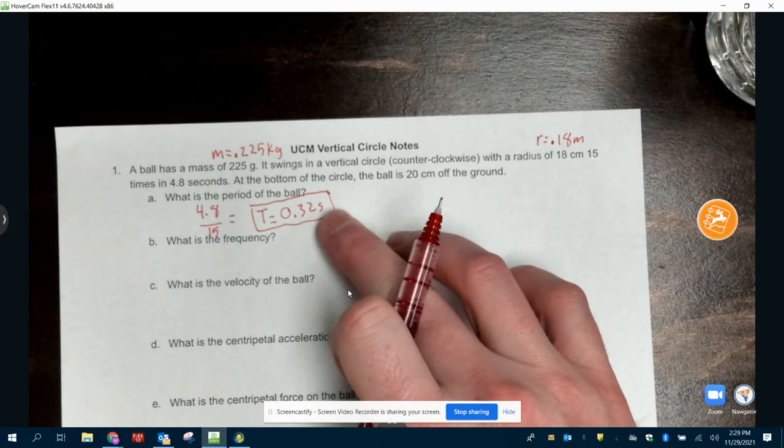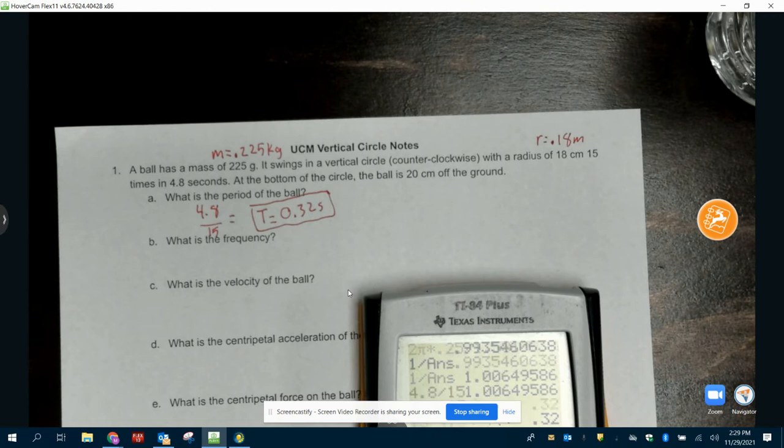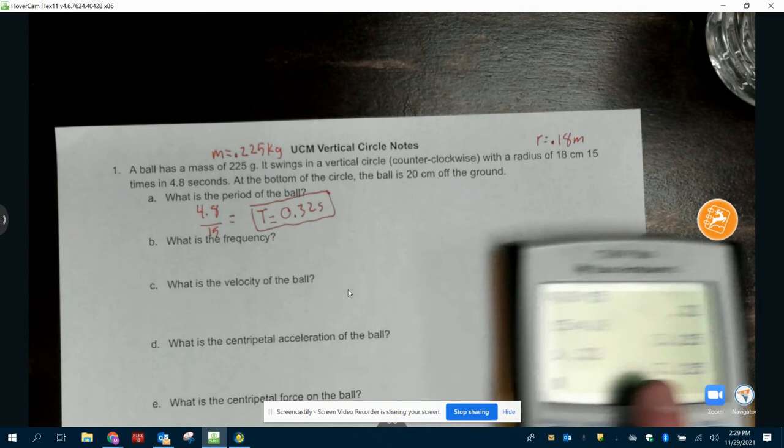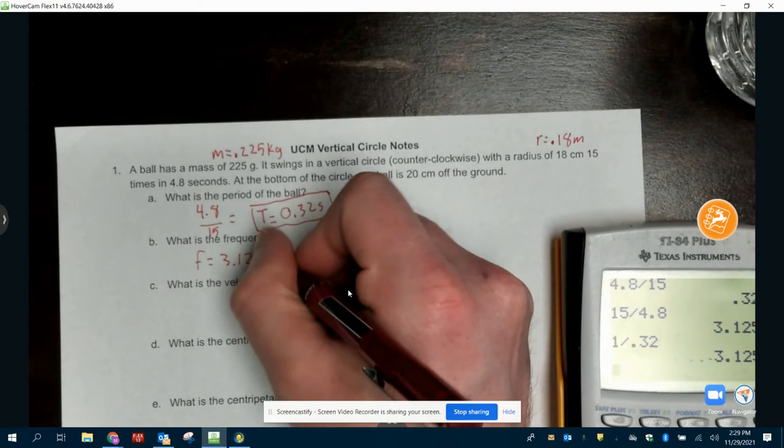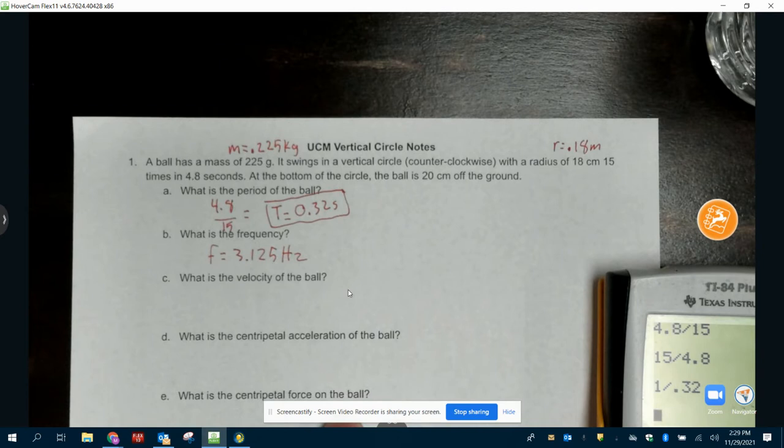Now, how do we get frequency? I can do one over this, or I can flip this. You can do 15 over 4.8, or 1 over 0.32, and you're going to get the same thing. The frequency here is 3.125, and it's measured in hertz. Velocity of the ball, acceleration, centripetal force.